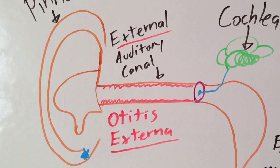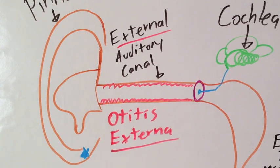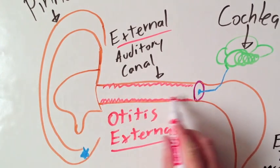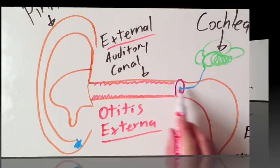That's why fancy folk like to call it otitis externa, because it's in the external auditory canal. When I'm treating this type of ear infection, I typically go straight for the eardrops, because the eardrops can get right in there and directly interact with the bacteria.